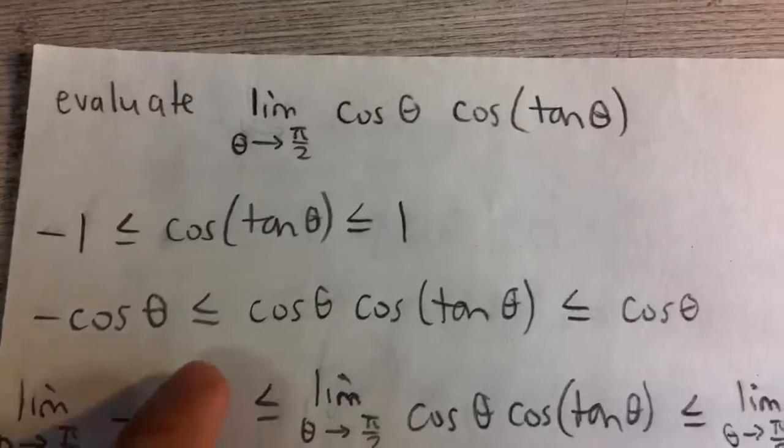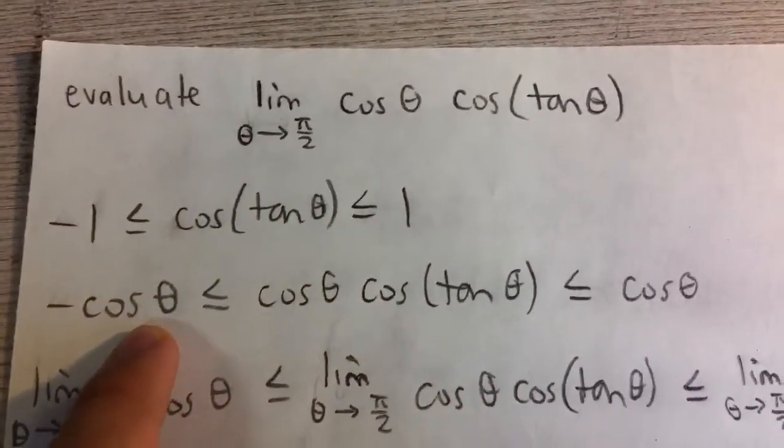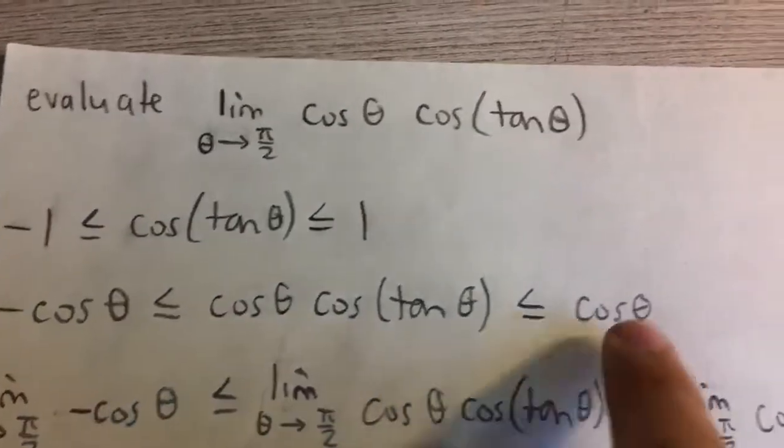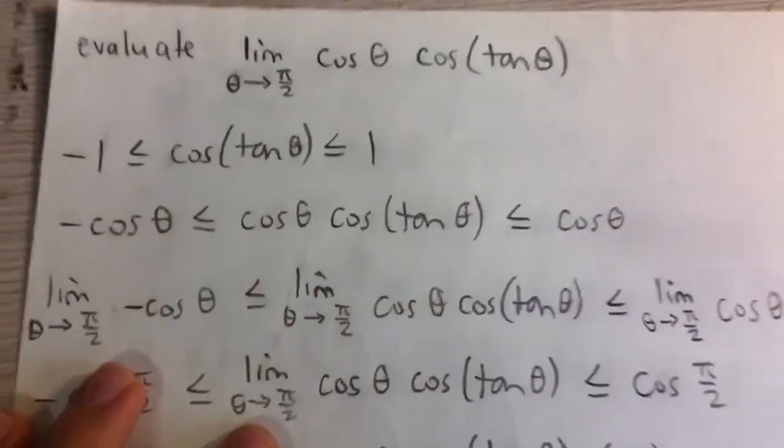So to do this we're going to multiply all three parts of the inequality by cosine theta. So we have negative cosine theta and then cosine theta and then cosine theta. Notice that we have this inside part, that's why we multiplied by cosine theta.